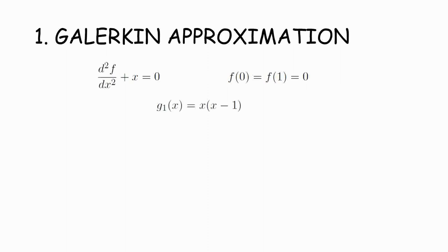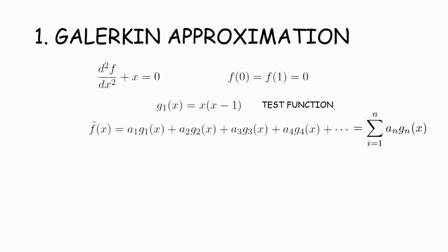We can pick as many of these as we like, and we'll call them g1, g2, g3, and so on. So then the approximation to f should be some constant alpha multiplied by the test function g. And this of course can be written as the sum. Cool.